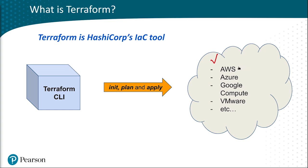Examples include AWS (Amazon Web Services), Azure, Google Compute, VMware, and so on. There are hundreds of providers that Terraform can work with. That's part of the beauty of Terraform — if you have or need infrastructure on multiple cloud providers or multiple on-premises services, Terraform can take care of all of that.